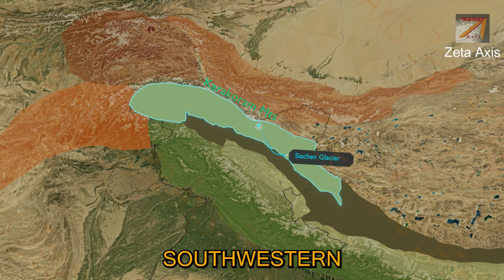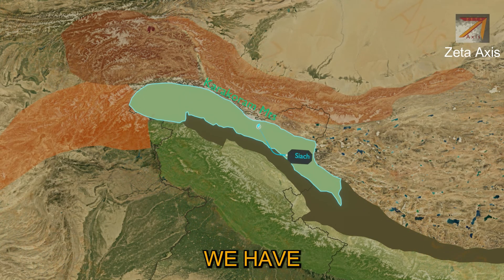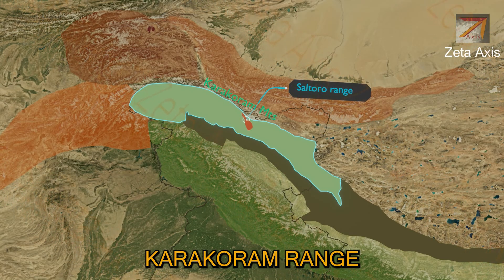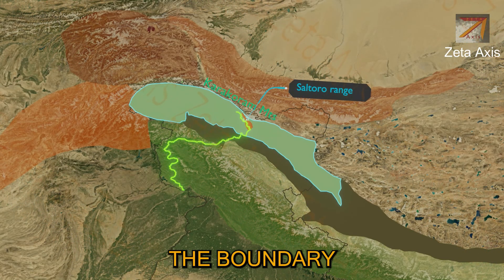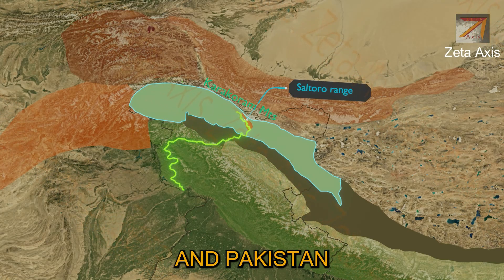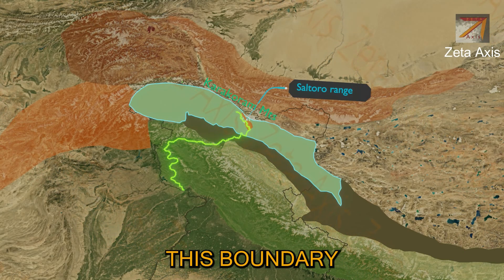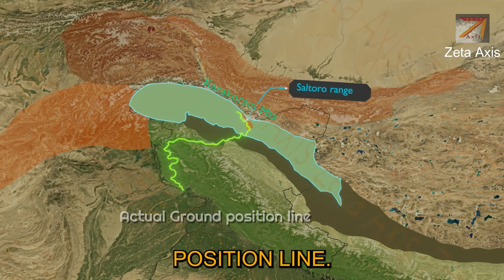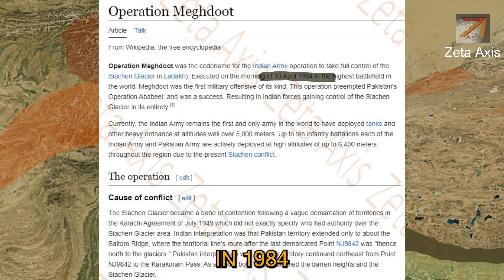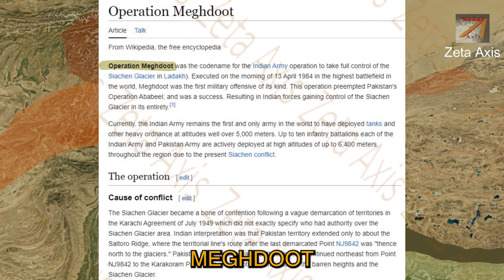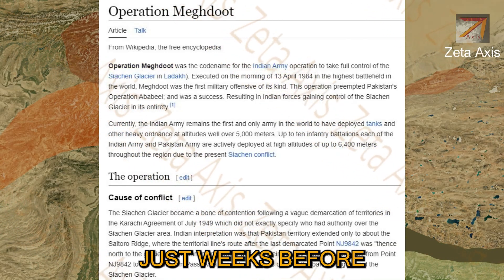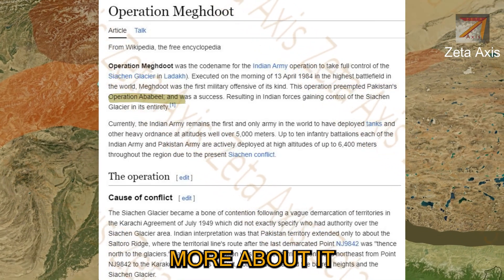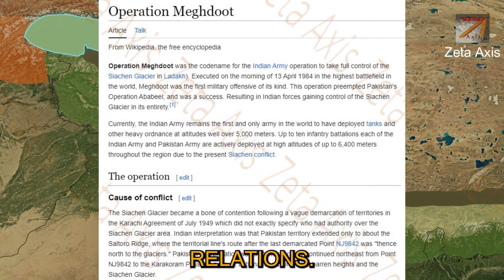Along the south-western margin of Siachen Glacier we have the Saltoro range, which is a sub-range of the Karakoram range. This range defines the boundary between India and Pakistan in this region, called the Actual Ground Position Line. The peaks of this range were captured in 1984 under Operation Meghdoot by the Indian Army, just weeks before Pakistan's plan to capture them. We will discuss this in more detail when we discuss Indo-Pak relations.